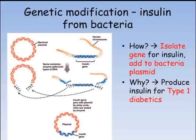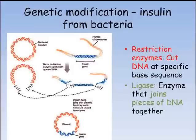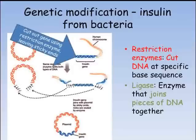One of the examples we looked at was how the gene for insulin could be added to a bacteria to produce human insulin to treat type 1 diabetics. The first stage of this process is identifying the correct gene. When it has been located, the gene is isolated by cutting it out using a restriction enzyme.